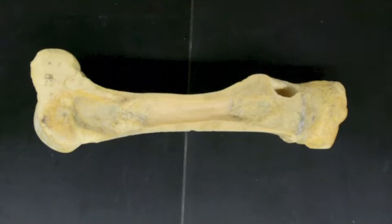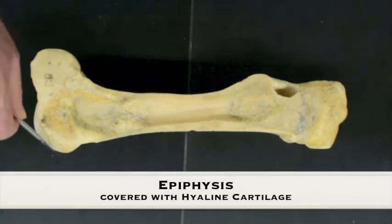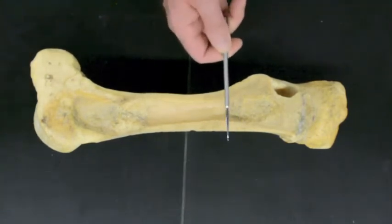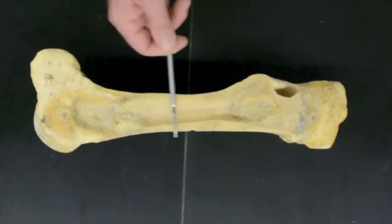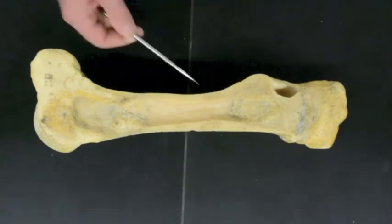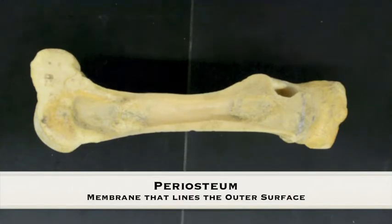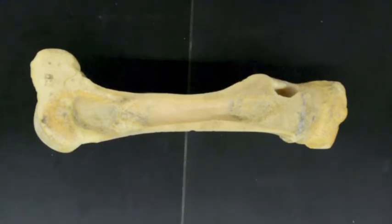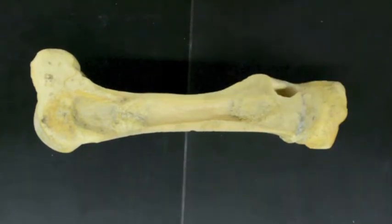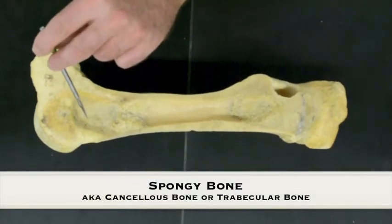This is our cow bone. The ends are called the epiphysis, and on the articular surface we have hyaline cartilage. The shaft in the middle is called the diaphysis. Around the outside of the bone we have the periosteum. The bone is formed by compact bone that we see here and spongy bone at the ends.